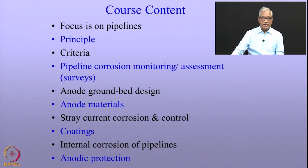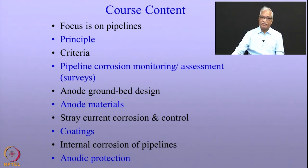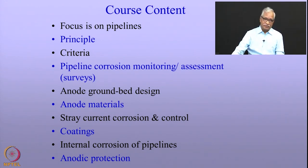The course will consist of cathodic protection criteria. Then we will cover pipeline corrosion monitoring and assessment surveys. Anode ground bed design is a very important one in the cathodic protection engineering of buried structures. We will also talk about anode materials, followed by stray current corrosion and its control, which is a very important aspect of buried structures. The buried structures are coated, so we will talk about coatings. It is also important to know the internal corrosion of pipelines because that also affects the structural integrity of the pipelines. In some cases, anode protection is carried out, so we will cover briefly the anode protection of tanks.